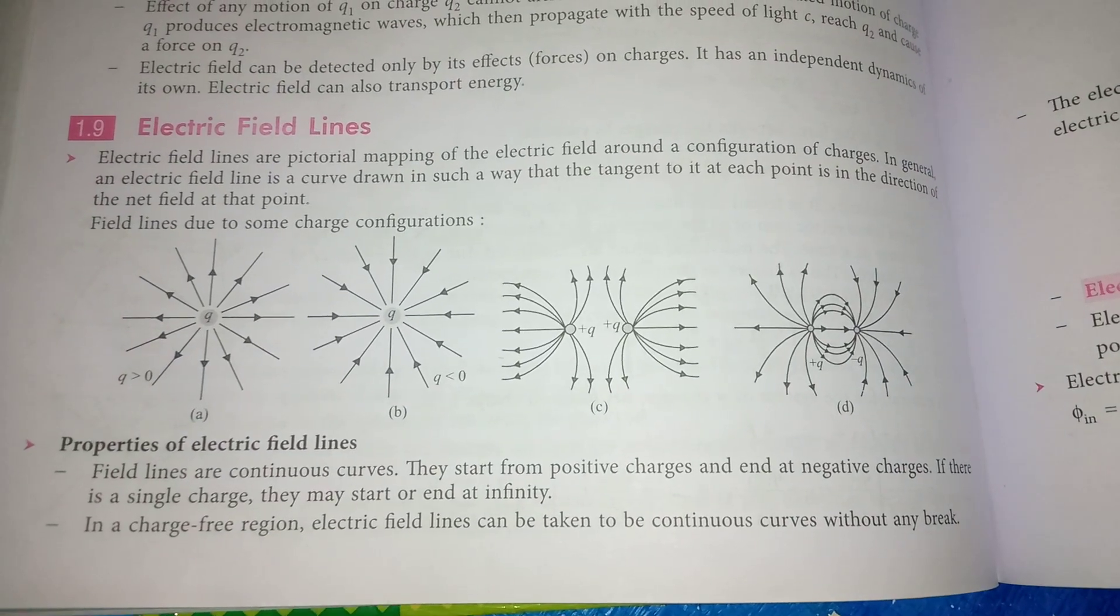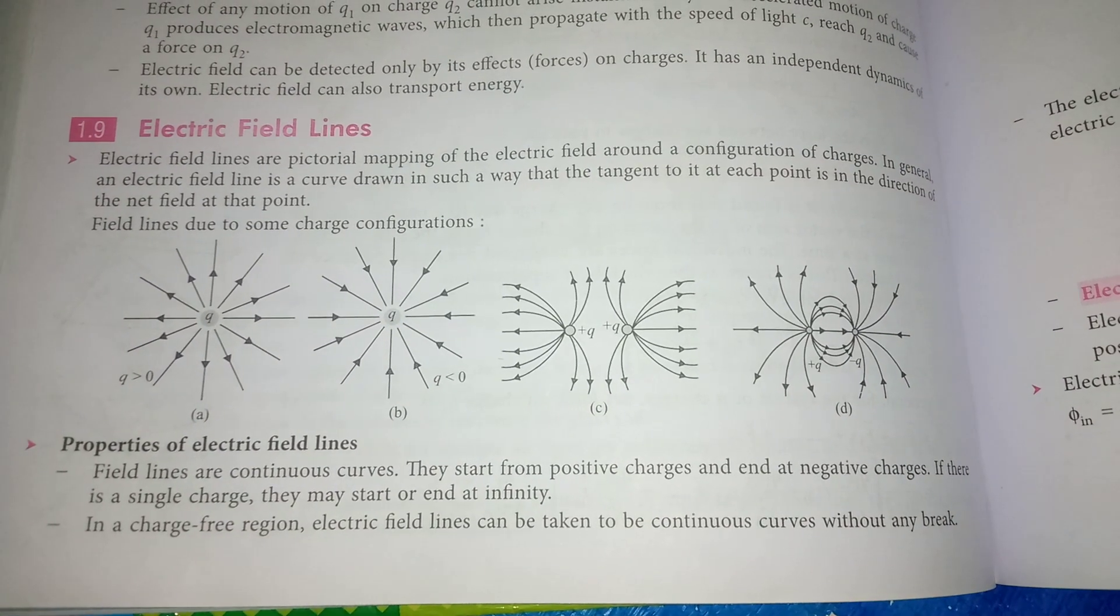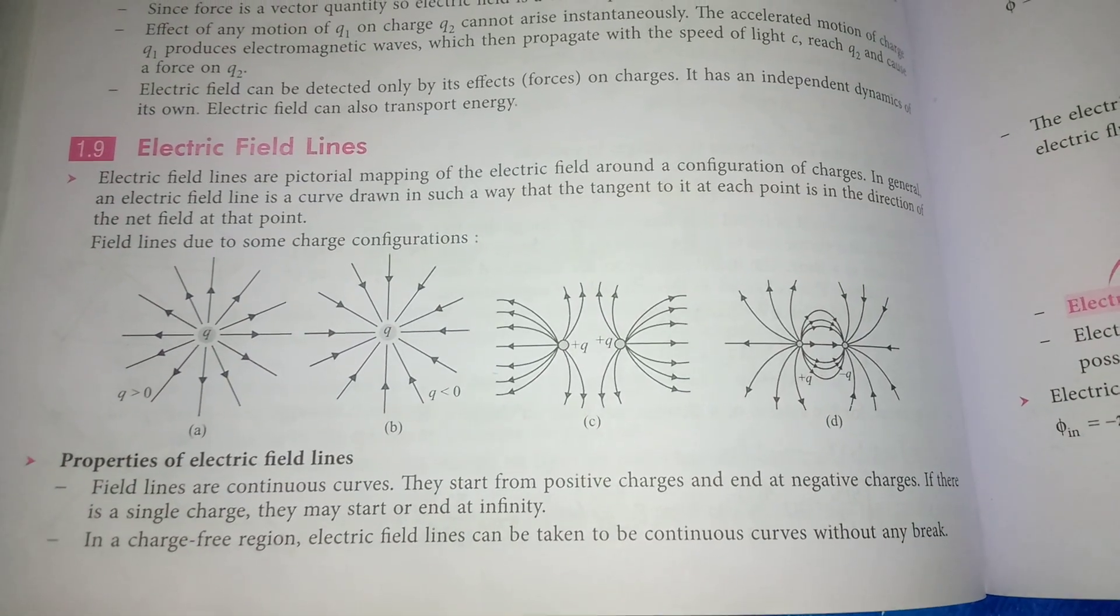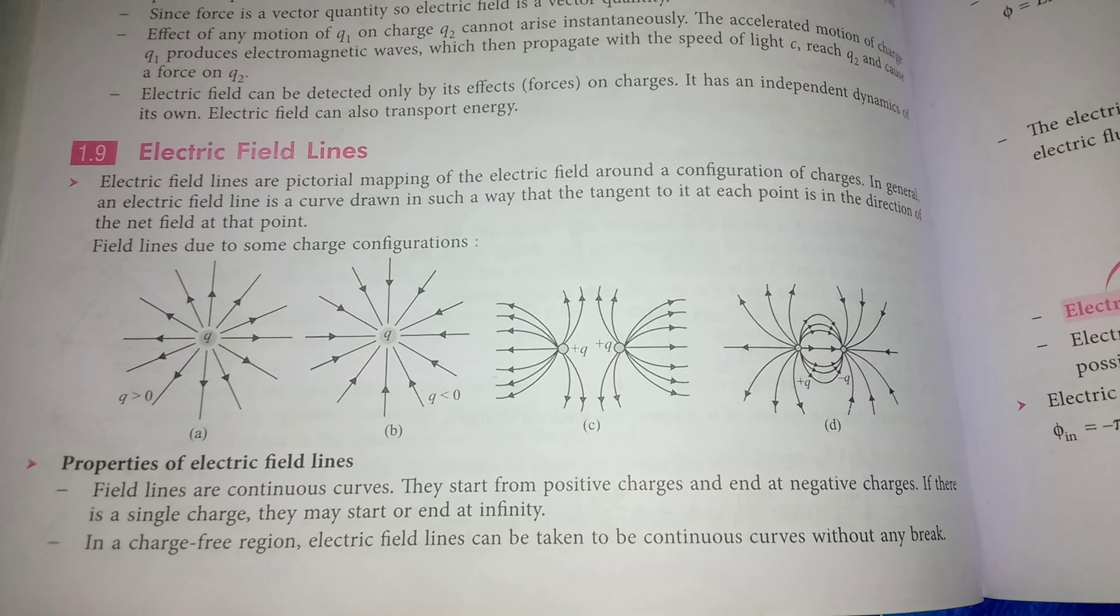Properties of electric field lines. Field lines are continuous curves. They start from positive charge and end at a negative charge.